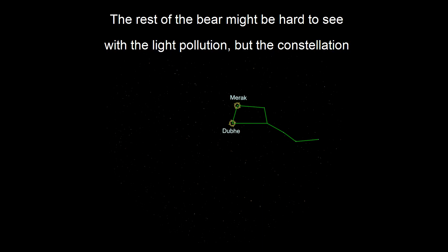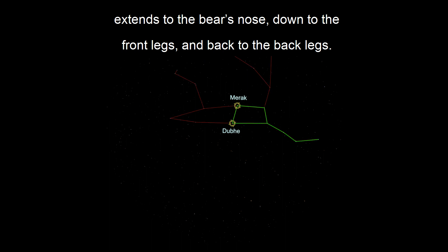The rest of the bear might be hard to see with the light pollution, but the constellation extends to the bear's nose, down to the front legs, and back to the back legs.